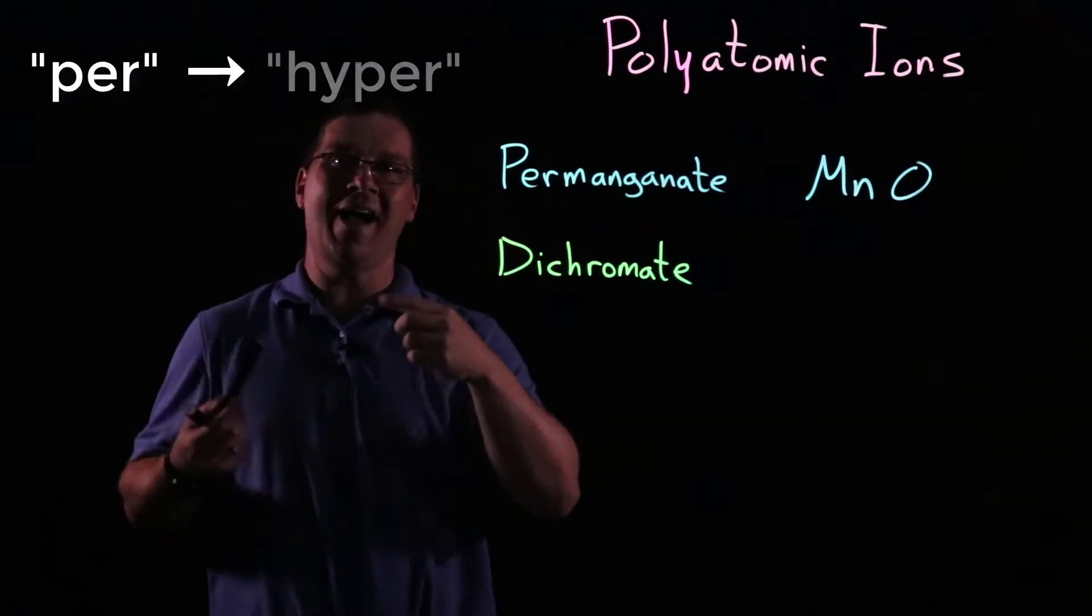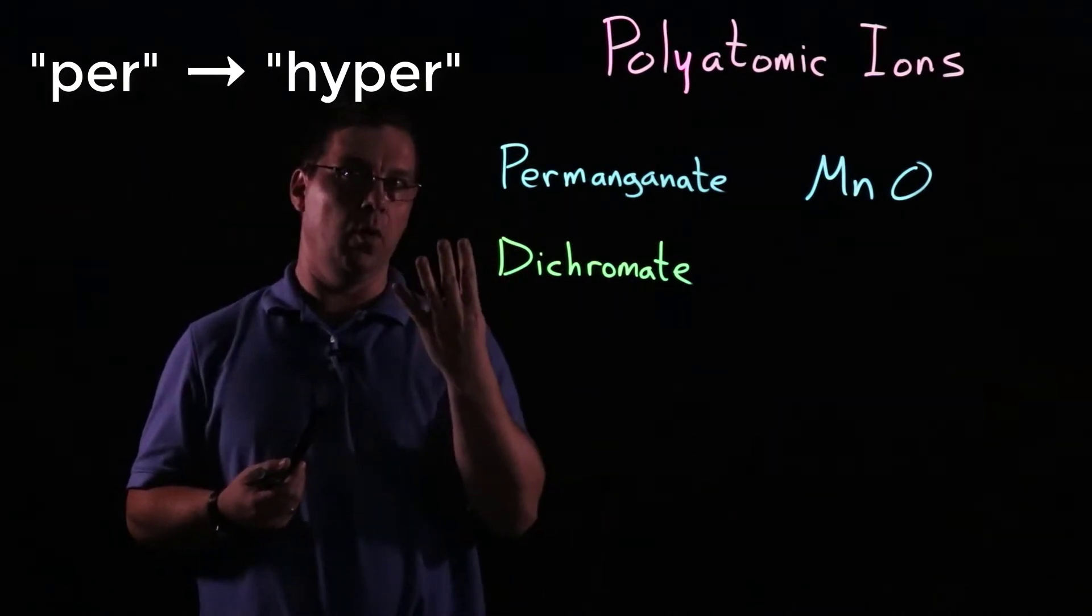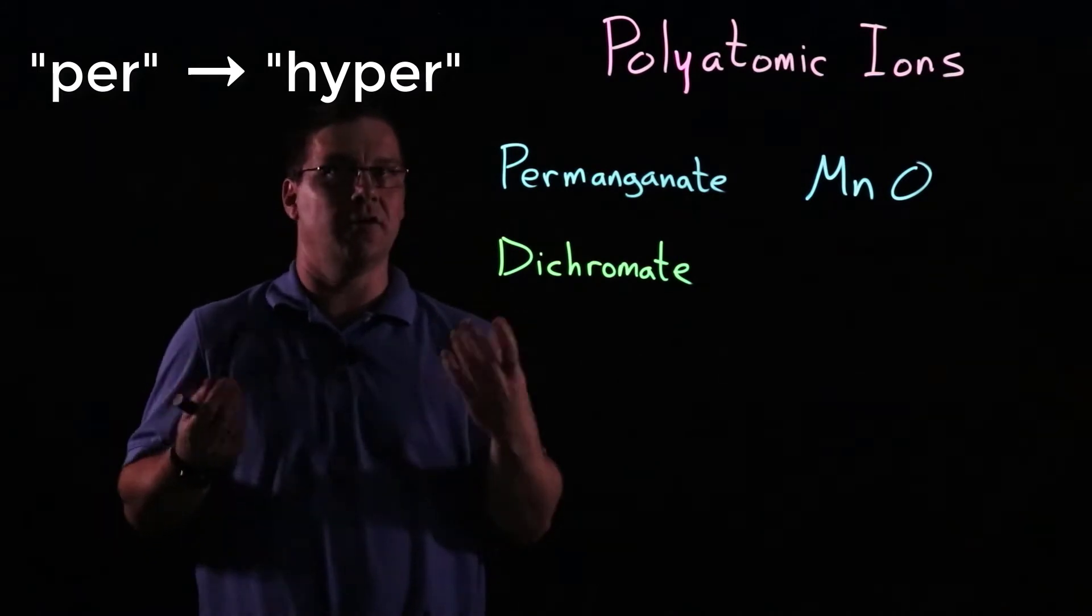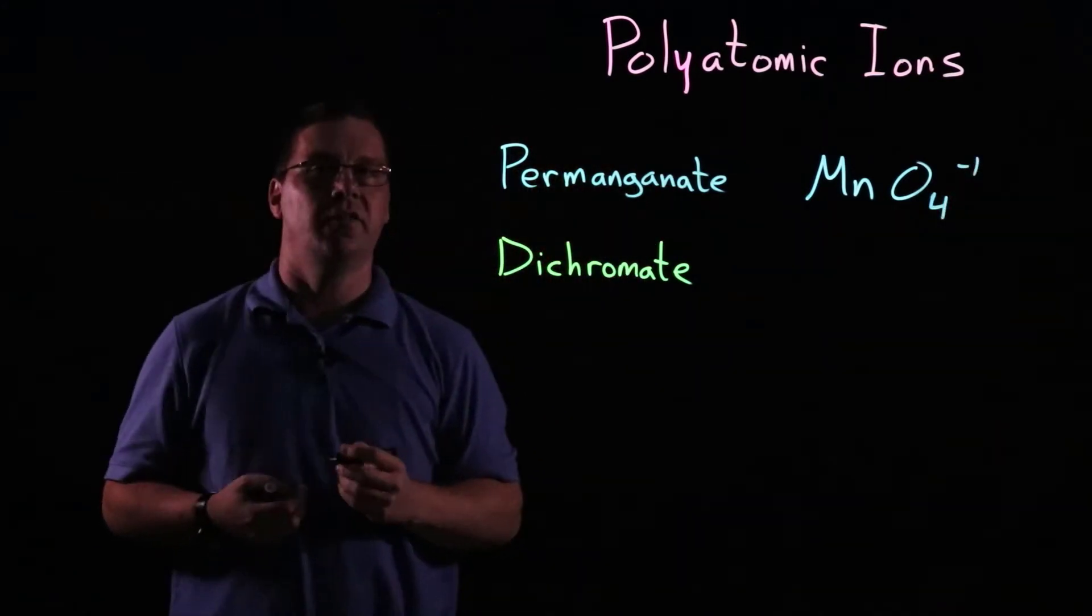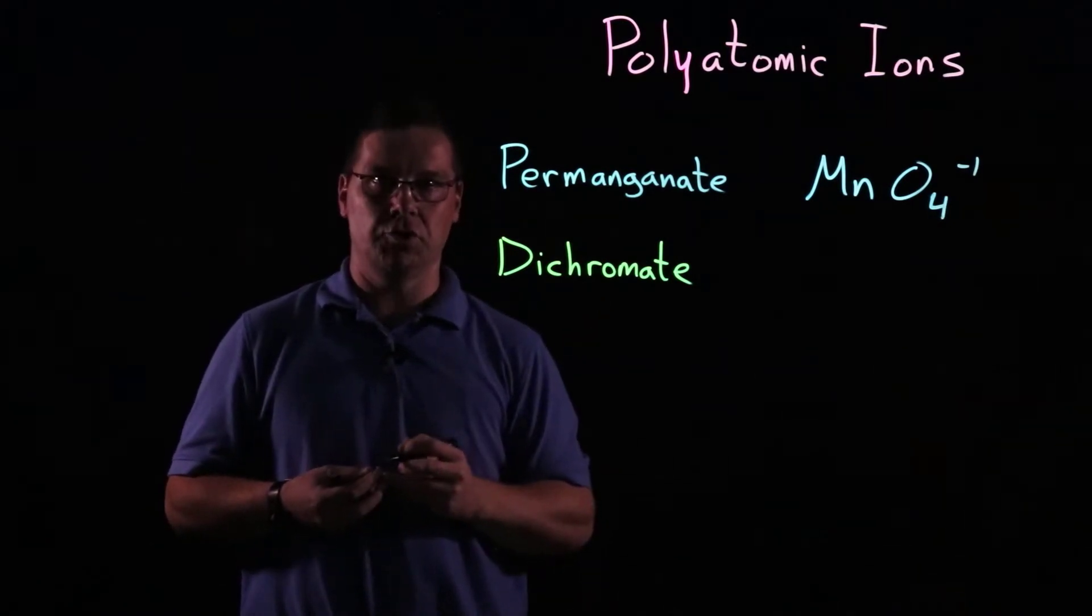Now, couple that with what you know about the per prefix, per, short for hyper, meant elevated. So of your choices between three or four, hopefully you're going to choose four, because that's the greater number of oxygen. And so permanganate has the formula M-N-O-4, and it's got a minus one charge.